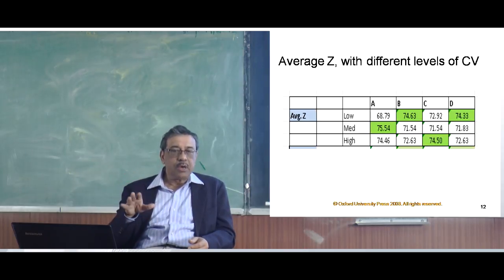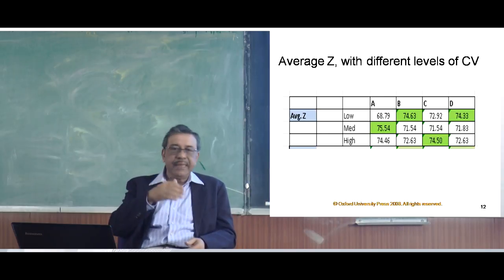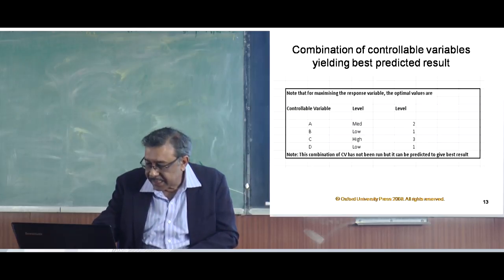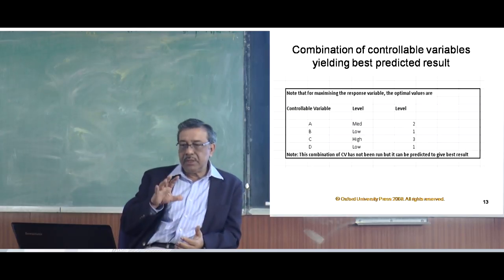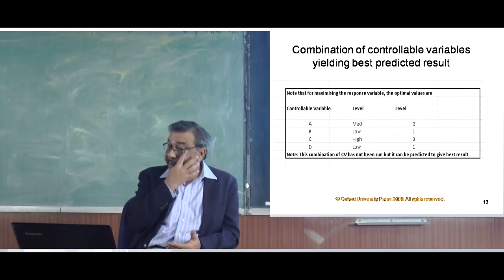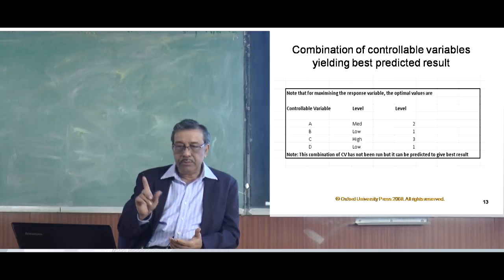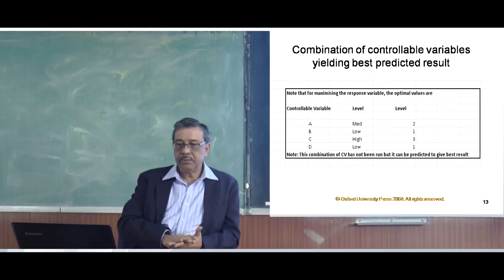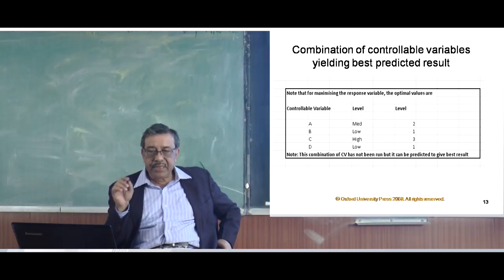If I use this combination in my control variables, my prediction is that my output will be optimized. To summarize: the combination of controllable variables yielding the best predicted result is a=medium (level 2), b=low (level 1), c=high (level 3) and d=low (level 1). This particular combination is 2, 1, 3, 1.